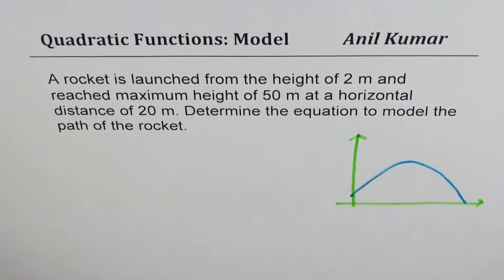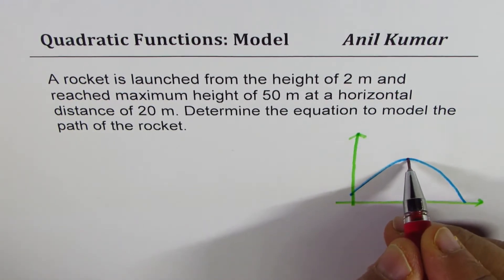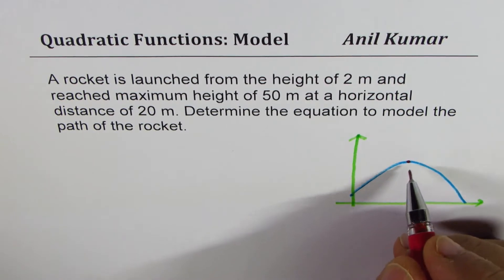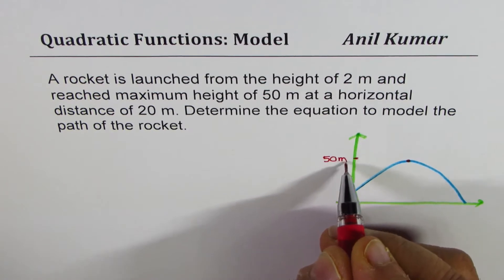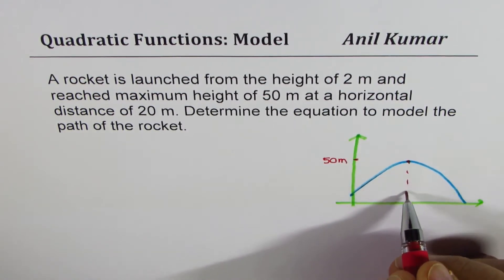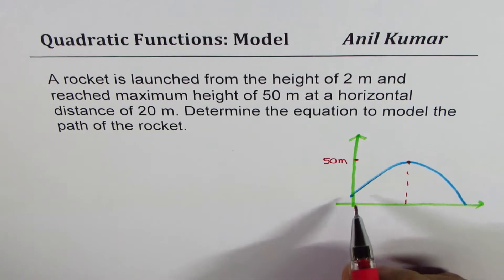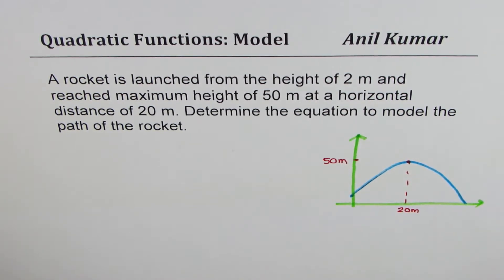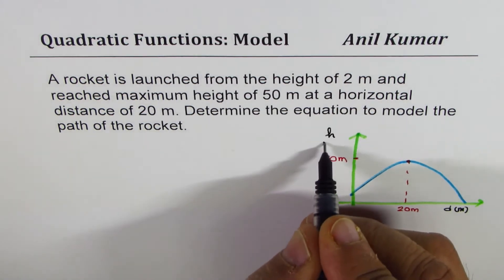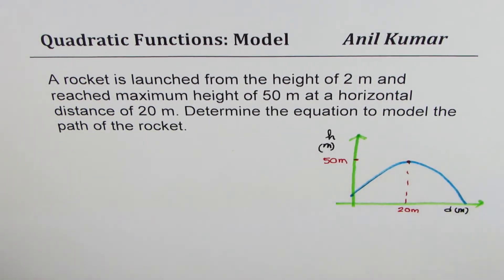Now at this moment when it turns we call that as a vertex and that happens when the height is 50 meters. And the distance from the foot of the place from where it is launched is 20 meters. So in this graph we have shown distance in meters along the x axis and height in meters along the y axis.